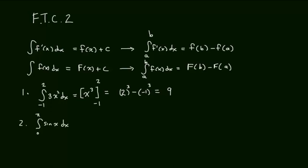Number 2 is the integral from 0 to pi of quantity 1 plus sine of x dx. First thing is, find the antiderivative, and the antiderivative of 1 is x. The antiderivative of sine of x is negative cosine of x. And I'm going to take that from 0 to pi.